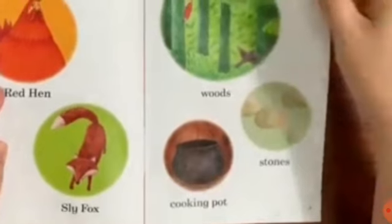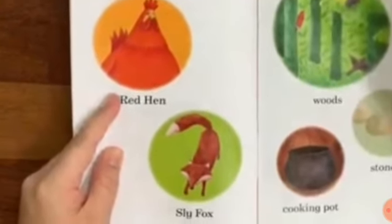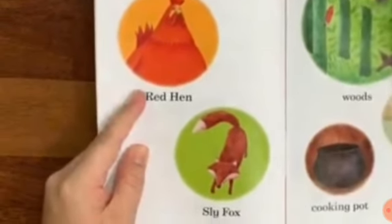So, what words we learned today? Woods. Cooking pot. And stones. How many characters are there in the novel? Two characters. Number one is red hen. Number two, sly fox.